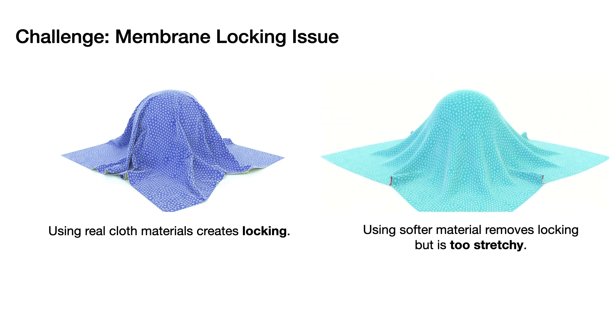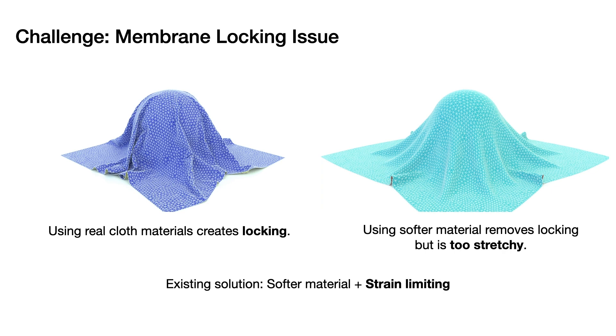To model real cloth materials like cotton, silk, and wool, modern simulators apply softer materials to avoid locking with a strain limiter to realistically capture cloth stretch behavior.